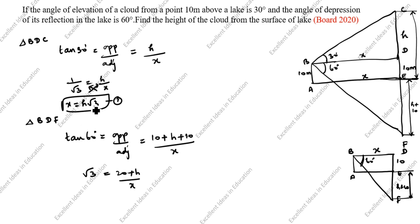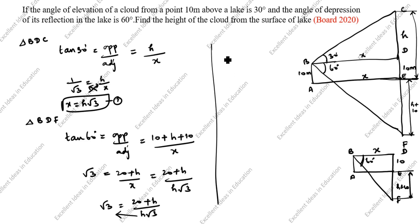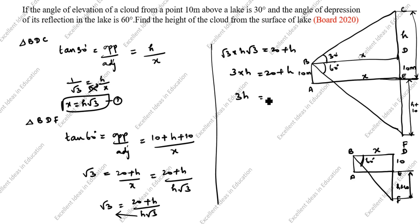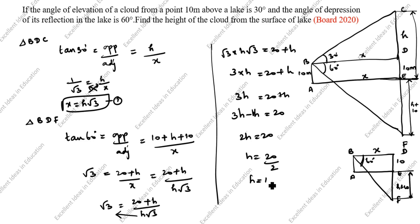Tan 60 = √3 = (20 + H) / X. Now substituting X = H√3: √3 = (20 + H) / (H√3). So root 3 times root 3 equals 20 plus H, giving 3H = 20 + H. This H moves to the other side: 3H minus H = 20, so 2H = 20, therefore H = 20 / 2 = 10 meters.